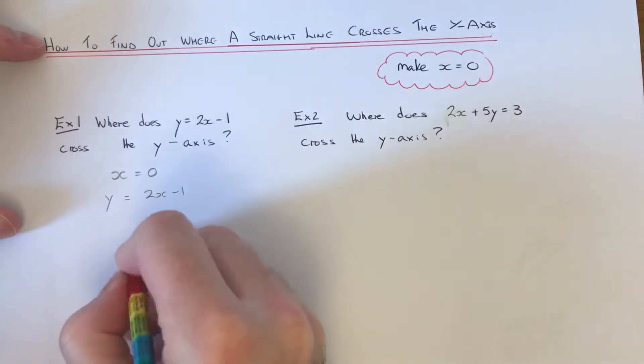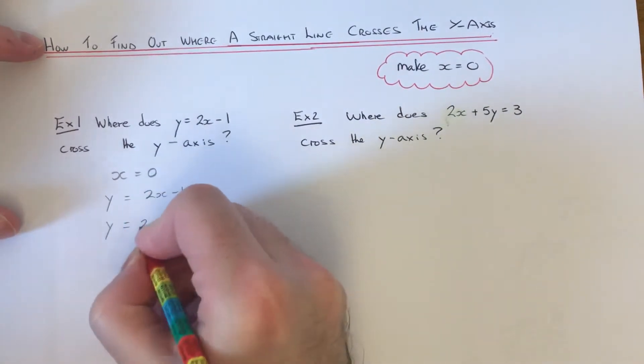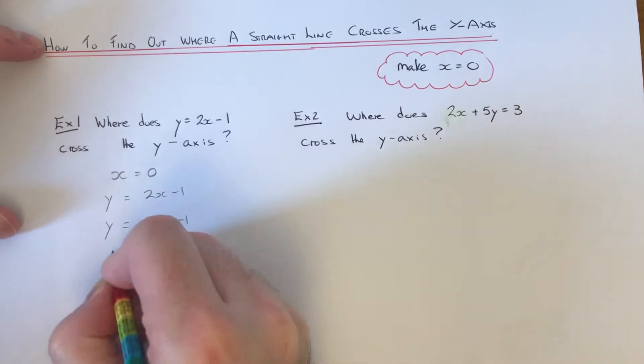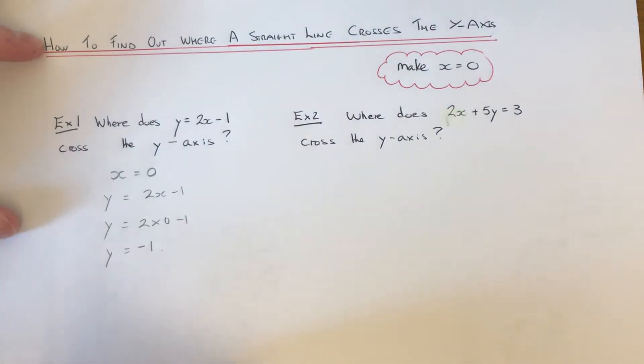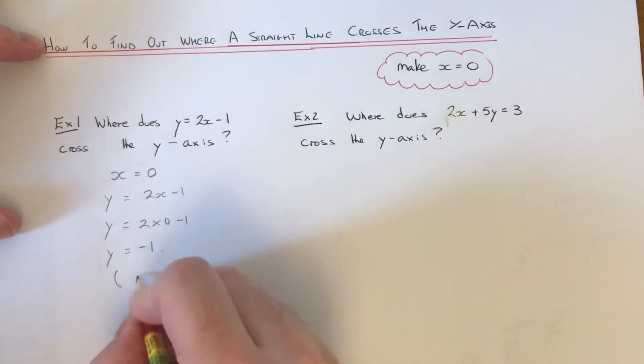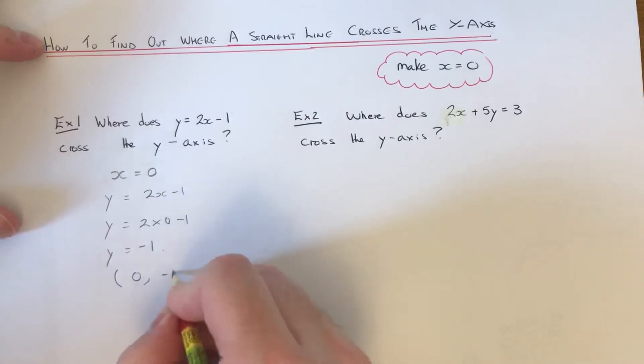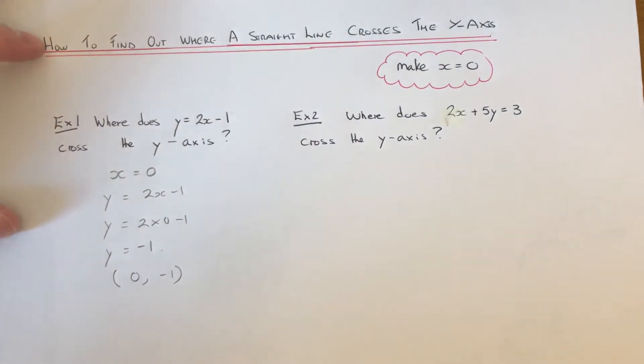Okay, so if we substitute 0 into our equation, so 2 times nothing is nothing and take away 1 is minus 1. Okay, so the point where it crosses the y-axis is (0, -1).